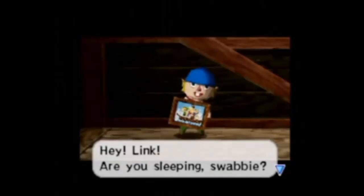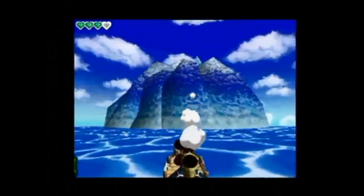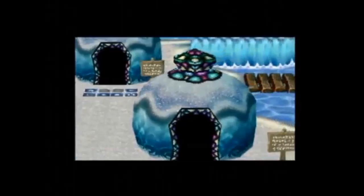Following the events of Wind Waker, Link is tasked with exploring islands in a new region of the Great Sea in order to rescue his friend Tetra. In the second half of the game, Link comes across the Isle of Frost, home to the Inuki tribe, and an interesting type of puzzle that has not been seen in any other Zelda game.